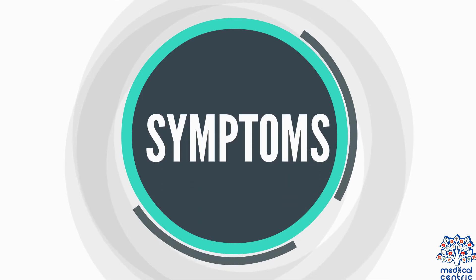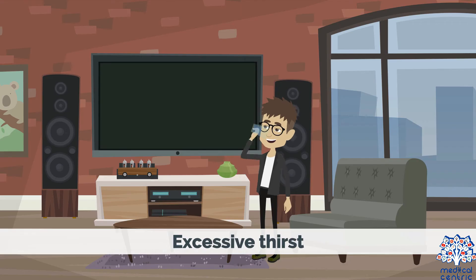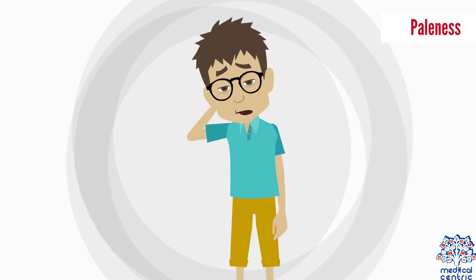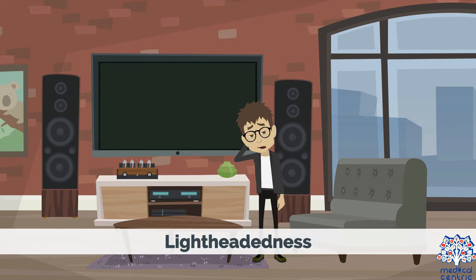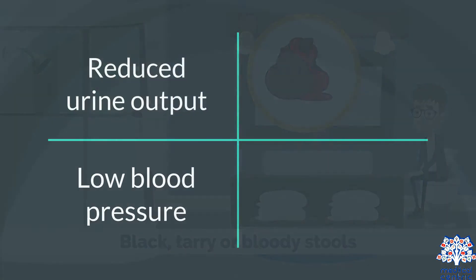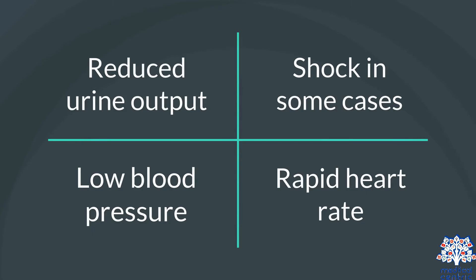Symptoms of bleeding varices include excessive thirst, vomiting which may contain blood, paleness, lightheadedness, black, tarry, or bloody stools, reduced urine output, low blood pressure, shock in some cases, and rapid heart rate.